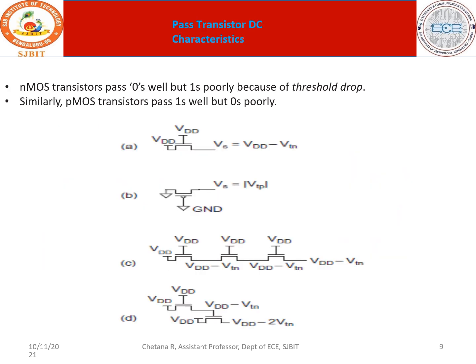Regarding pass transistors: NMOS passes logic 0 very well but logic 1 is deteriorated. PMOS is very good for passing logic 1. This is because of the threshold voltage drop. When you have an NMOS device with the gate connected to VDD and the source also at logic 1, the output would not be completely VDD — it would be VDD minus VTN.